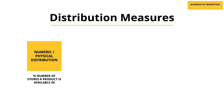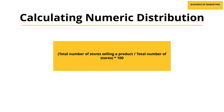Numeric distribution is simply the percentage number of stores where your product is available in a specific region. To calculate it, divide the total number of stores selling your product in a particular region by the total number of stores in that region, then multiply by 100.